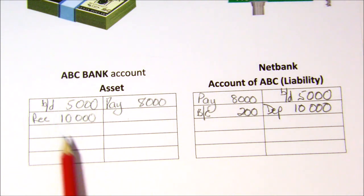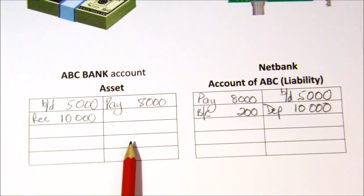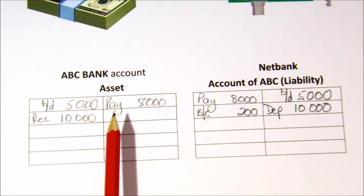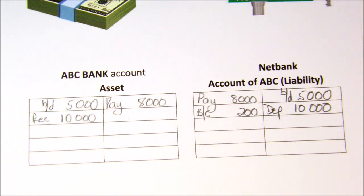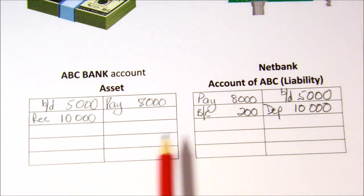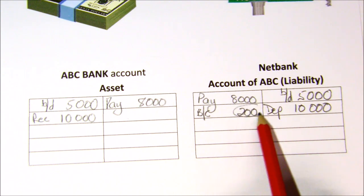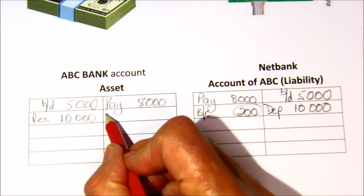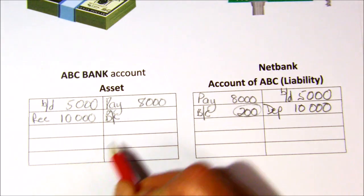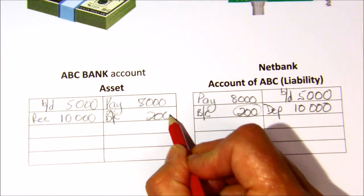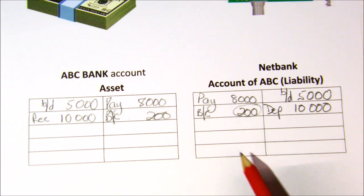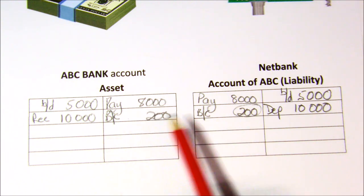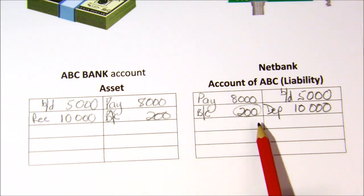At this point you don't know about the bank charges, so if you look at your balance it's not agreeing with what the bank shows — there's a difference. When we do the reconciliation, we see there's a problem. It turns out to be bank charges, so we go to our cash payments journal and put in bank charges of two hundred rand. That's reconciling — finding out why there are differences.